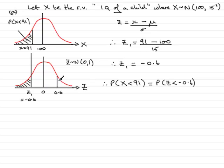And if I look at this area, this area is exactly the same as that area there. So this is equal to the probability that z is more than 0.6.